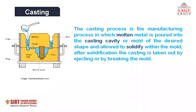Basically, casting as shown in the figure consists of pouring a molten metal into a cavity. This cavity is formed with the help of a pattern. As you can see in the figure, there is a cavity in which molten metal is poured. This cavity is the replica of the desired component, and that replica is formed with the help of a pattern.